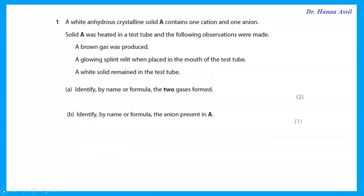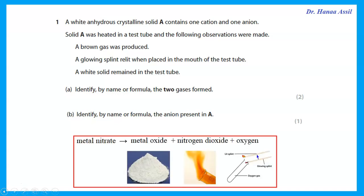A white crystalline anhydrous solid A contains one cation and one anion. Solid A was heated in a test tube and the following observations were made: a brown gas was produced, a glowing splint relit when placed in the mouth of the test tube, and a white solid remained in the test tube. When we heat a solid and it gives a brown gas and a gas that relights a glowing splint, we are probably heating a metal nitrate.